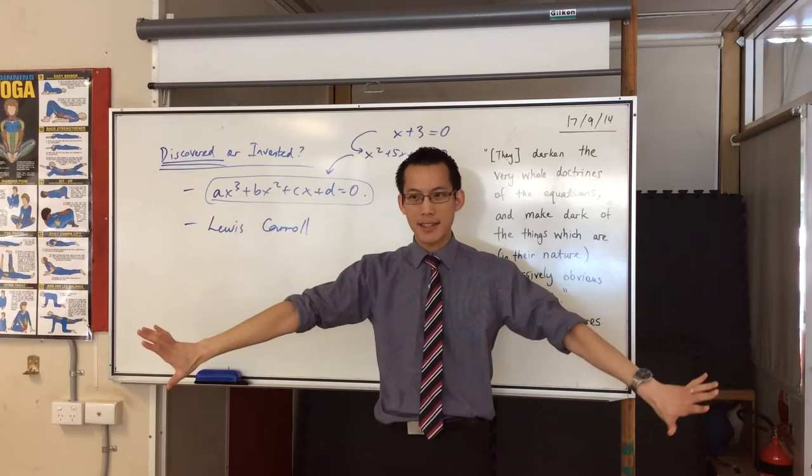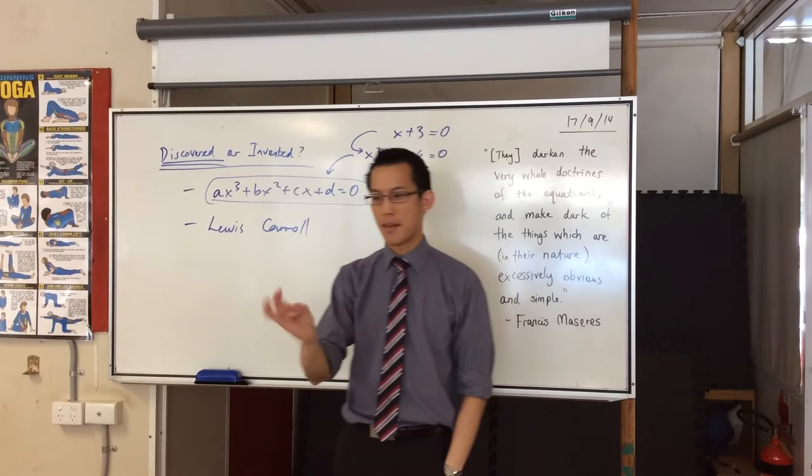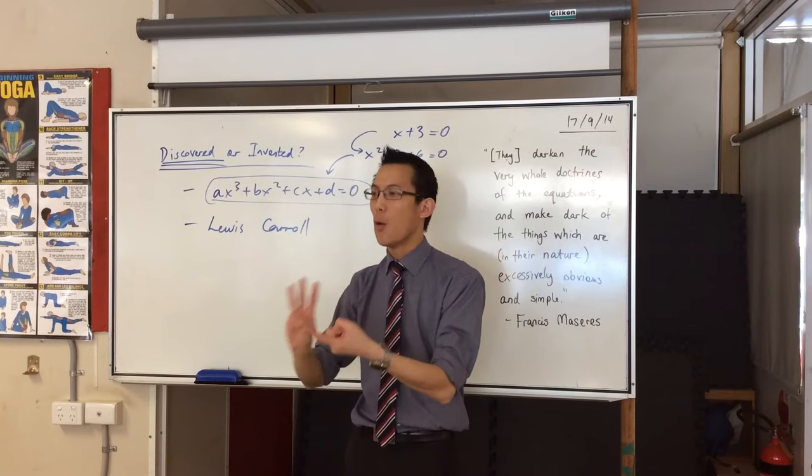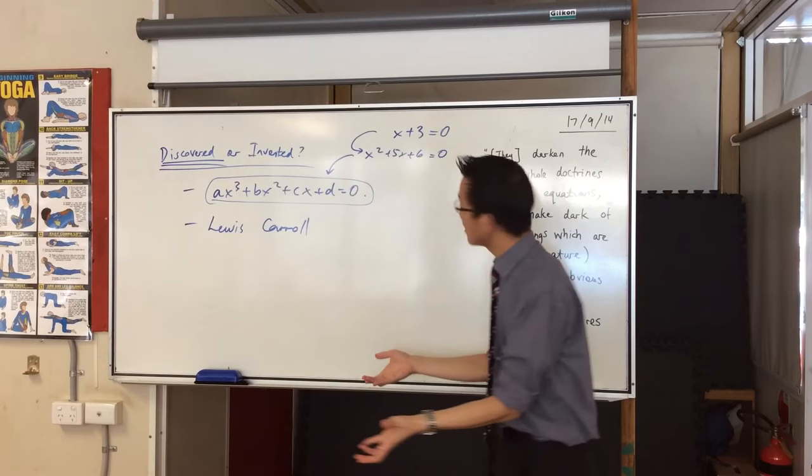And the way he justified it was this, I'll say it to you, maybe you want to write it down and have a think about it later. He said, think about the number three. I don't know why everyone picks three. Three is an important number, I guess. Think about the number three. Where does the number three exist? Where is the number three? Where can you point to and say, look, there's, that's three. That's what three is. Now, see this, that's interesting.